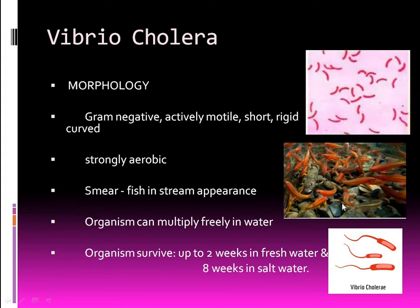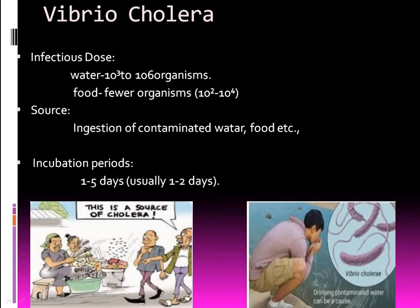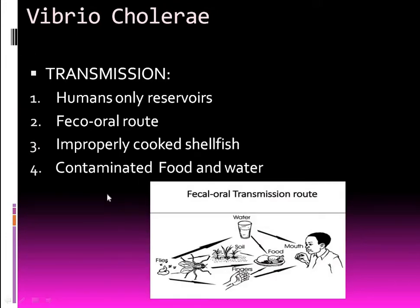Vibrio cholerae survives in salt water for eight weeks. The infectious dose is one thousand to one lakh organisms, and in food, fewer organisms are enough to cause cholera. The source is ingestion of contaminated water and food. The incubation period is one to five days. Transmission occurs via the fecal-oral route through contaminated water, food, or improperly cooked foods — humans are the only reservoir.